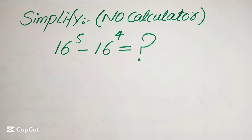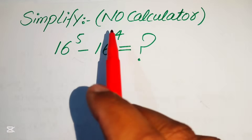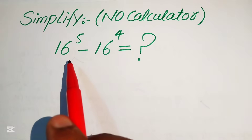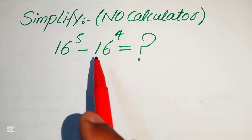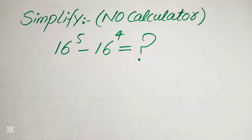Hello everyone. How to simplify this nice algebraic expression without using the calculator. So here you see that the calculator is not allowed in this problem. We have 16 to the power of 5 minus 16 to the power of 4, and we want to write this into simplified form.